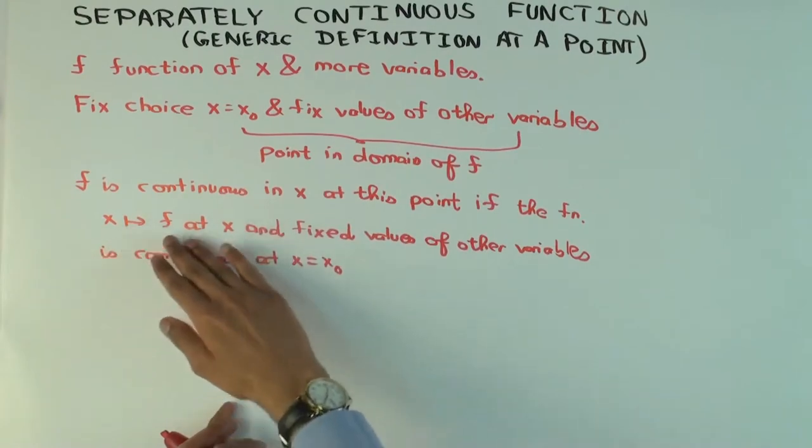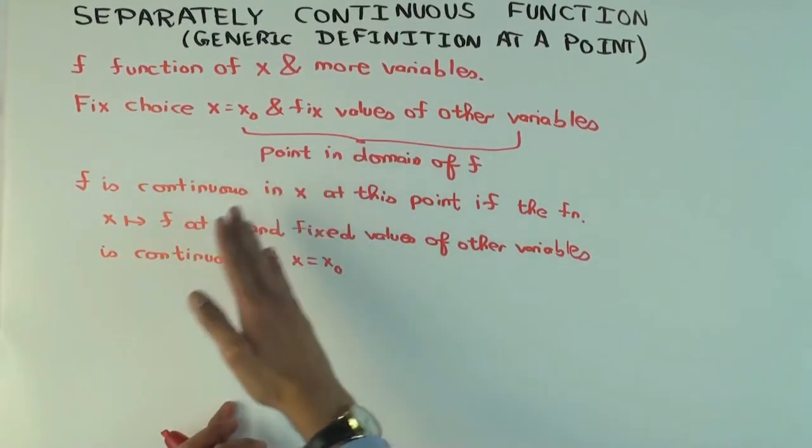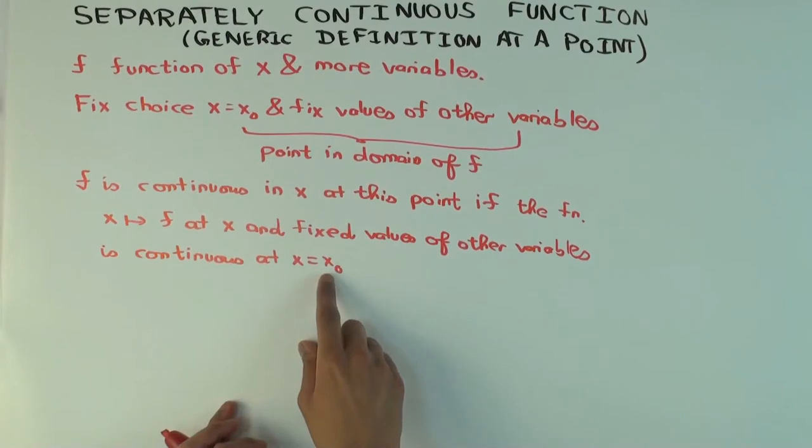So all the other inputs I'm fixing, and x is the only one I'm varying, if that function is continuous at x equals x naught.